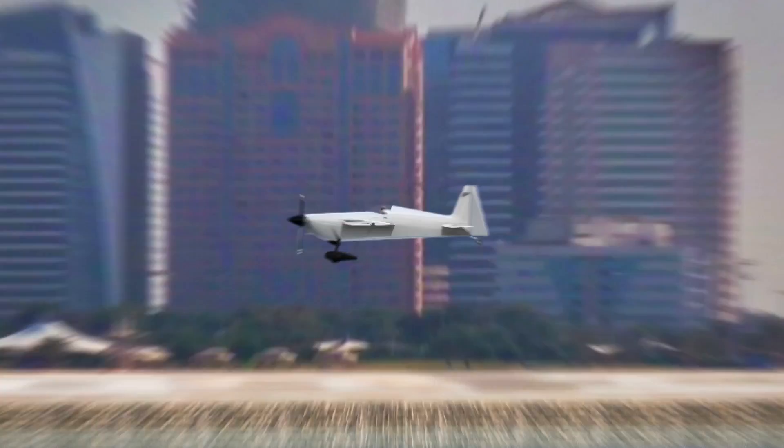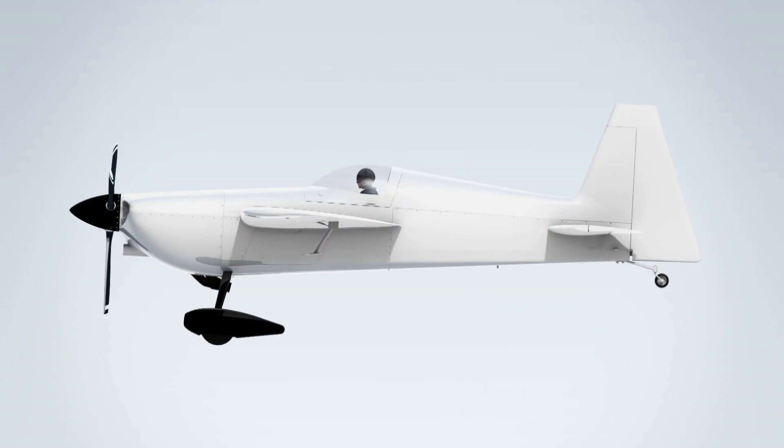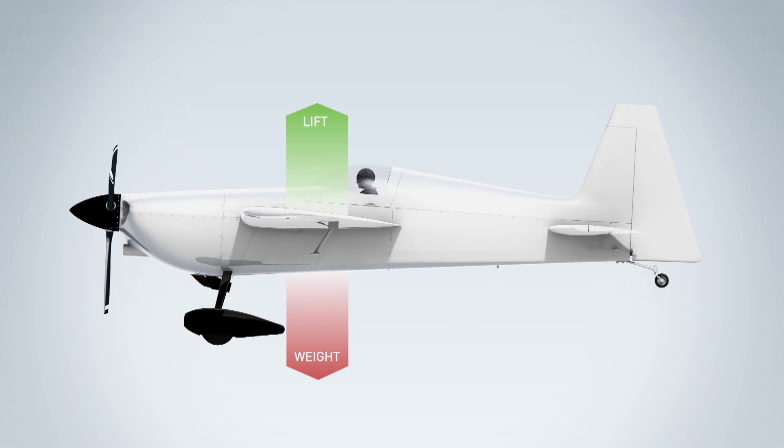CG stands for center of gravity, and it is the point at which the aircraft would balance fore and aft. The forces at work on the aircraft with regard to balance are the lift produced from the wing, and the weight of the aircraft, which is centered at the CG point.